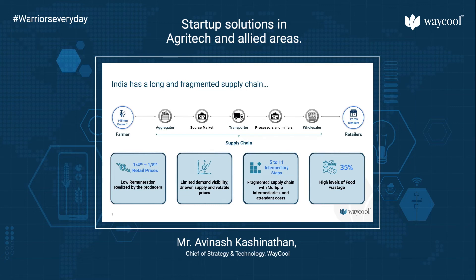You need more disaggregation happening at that end as well. This is why there are aggregations and source markets, with multiple transporters. If the produce is not fresh, you will have processing, milling, and secondary processing being done. Then you have an entire wholesale distribution network before going to the retailers.